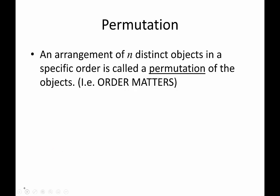So what is a permutation? It's an arrangement of n distinct objects in a specific order — that's called the permutation of the objects. We say order matters. Before I get to the formula, I like to look at examples first, because personally, when I'm dealing with a permutation, I don't actually like using the formula. I like applying the counting principle to it instead.